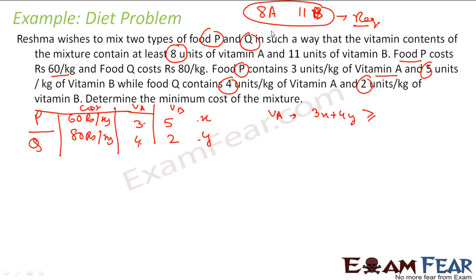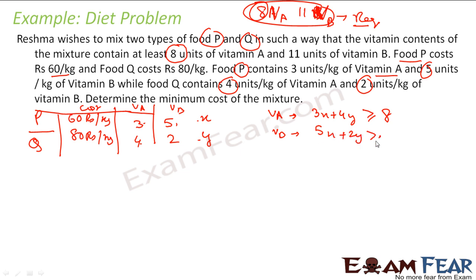For vitamin A: food P gives 3x units and food Q gives 4y units, so 3x + 4y must be greater than or equal to 8. For vitamin B: food P gives 5x units and food Q gives 2y units, so 5x + 2y must be greater than or equal to 11. These are our two constraints.